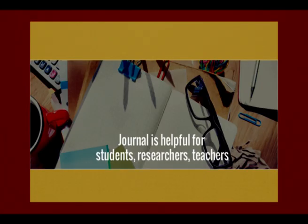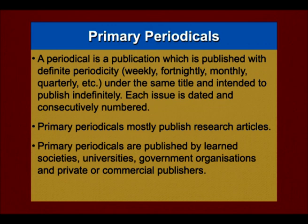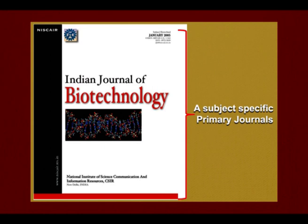A primary periodical is useful for students, researchers and teachers. It is a publication published at a definite periodicity — it could be weekly, fortnightly, monthly, quarterly, and so on — under the same title, intended to publish indefinitely. Each issue is dated and consecutively numbered. Primary periodicals mostly publish research articles. They are published by learned societies, universities, government organizations and private or commercial publishers. One typical example is the Indian Journal of Biotechnology, a subject-specific primary journal. There are also subject-specific primary journals on library and information science published by DesiDoc.